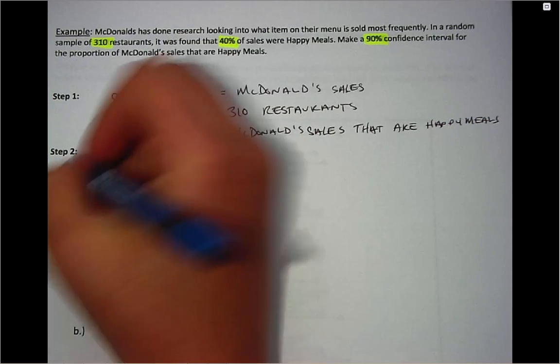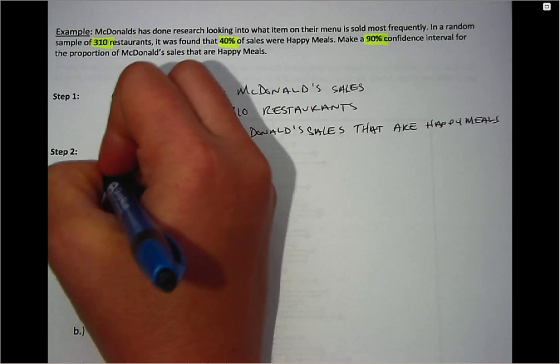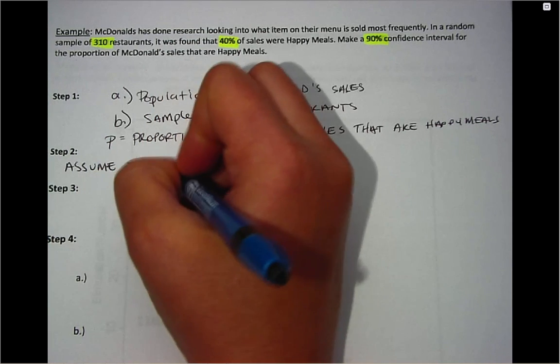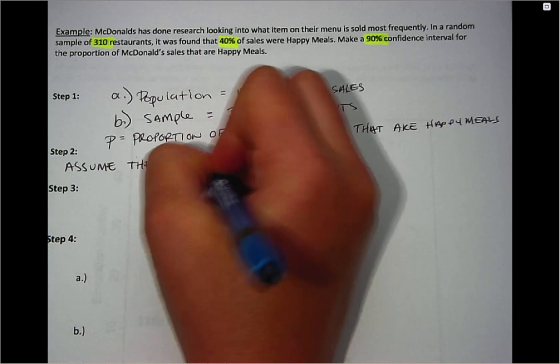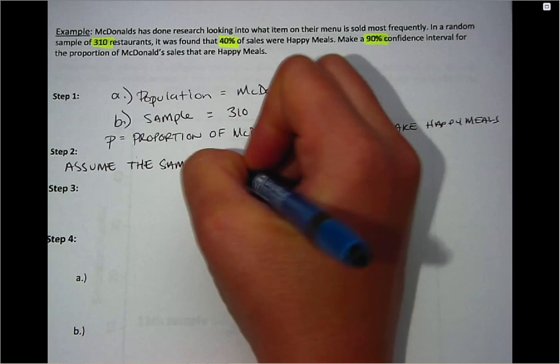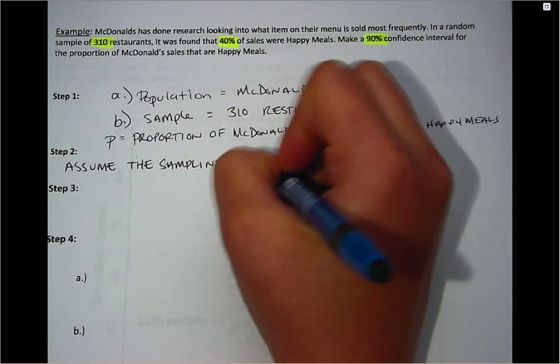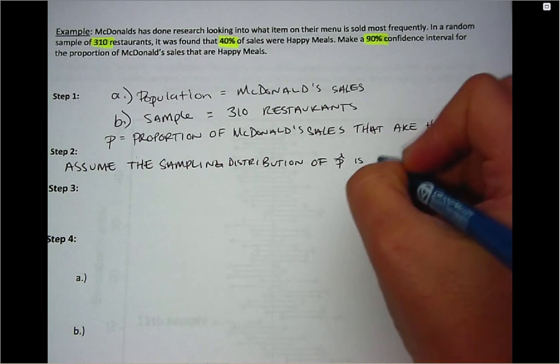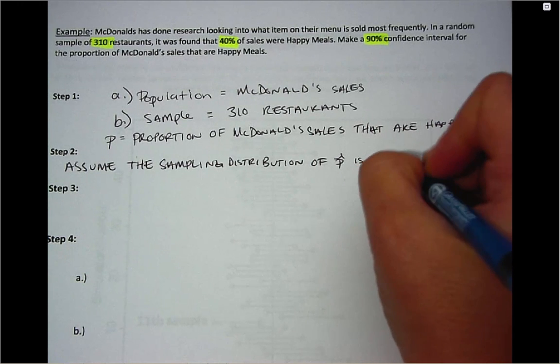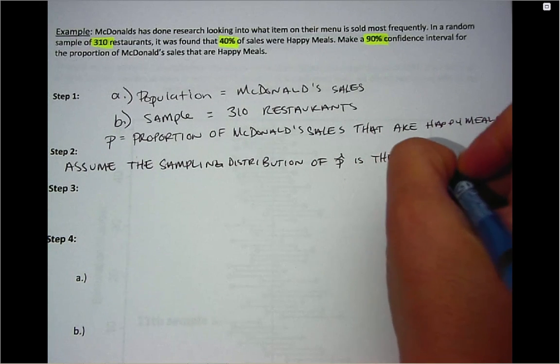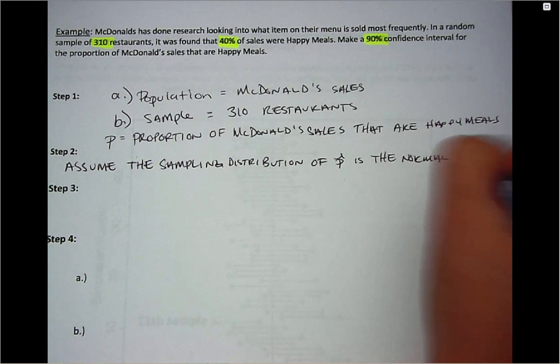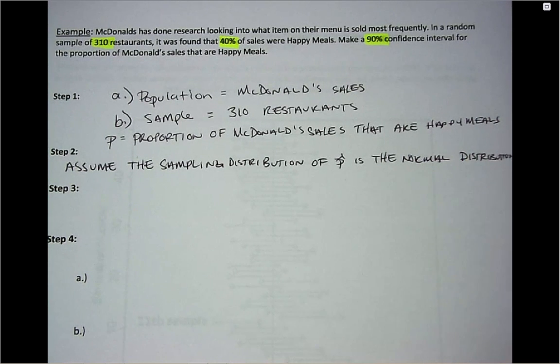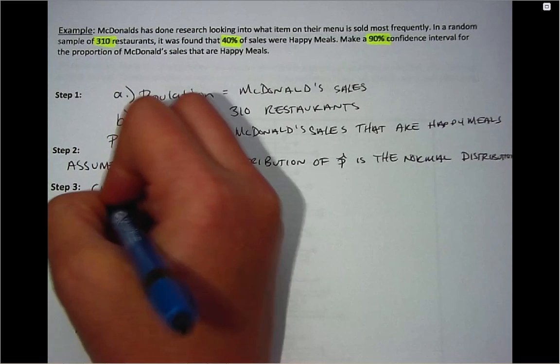Next we want to state our assumption. So remember we're always going to be saying that we assume the sampling distribution of P hat is the normal distribution. And then we would like to verify that by checking conditions.